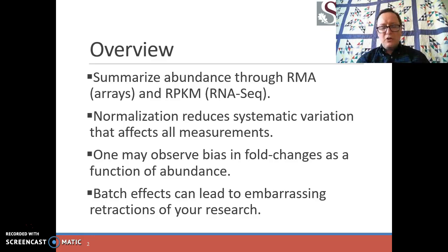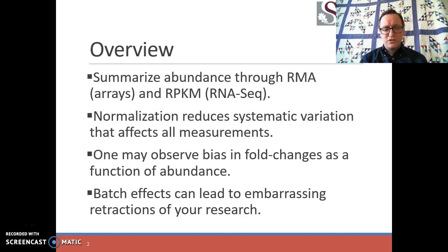From there we'll talk about systematic variation — how different factors may cause all abundance values for some sample to rise in comparison to another experiment. We'll then talk about bias that can appear as a function of intensity and ways to detect that. And finally we'll talk about batch effects, which have taken a rather prominent role in certain kinds of research, so it's important that we address them here.